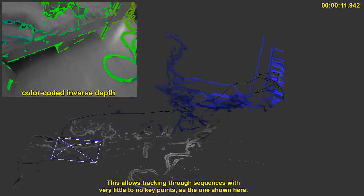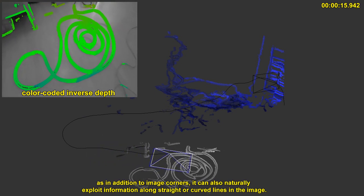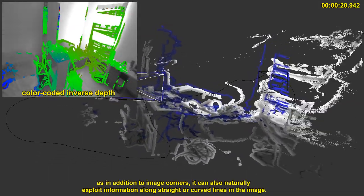This allows tracking through sequences with very little to no keypoints, as the one shown here, as in addition to image corners, it can also naturally exploit information along straight or curved lines in the image.